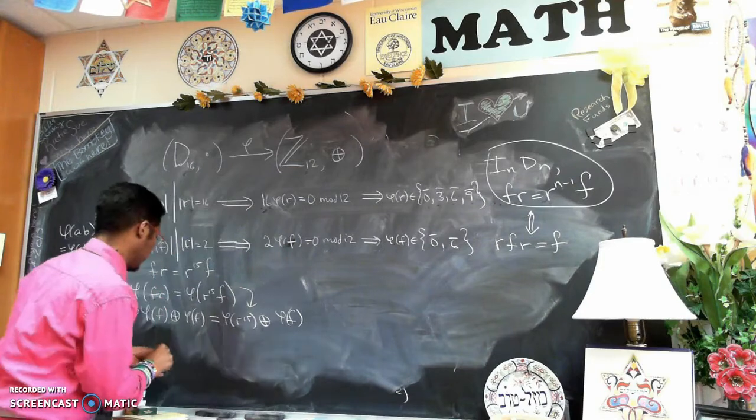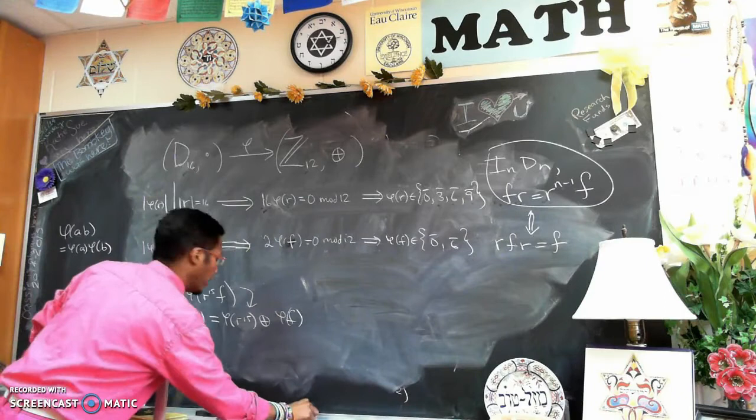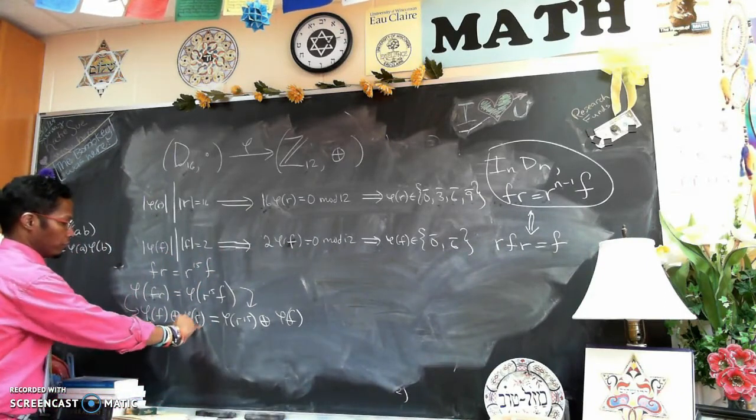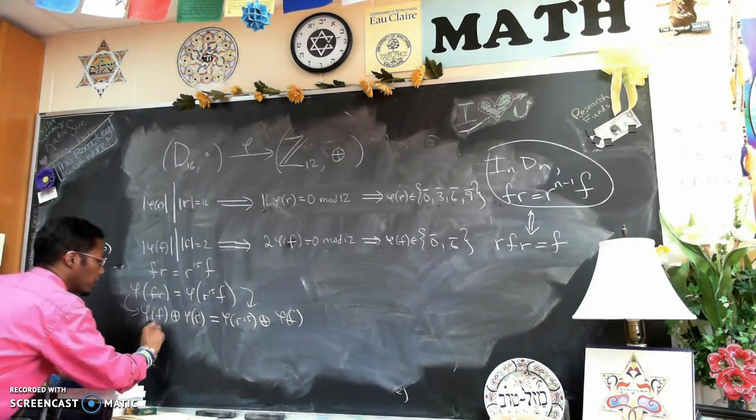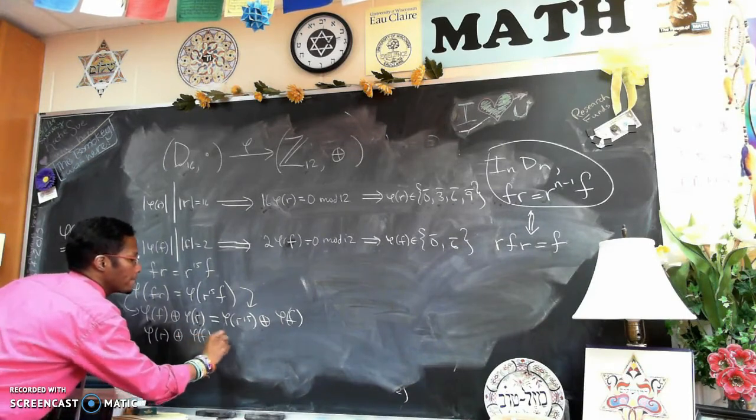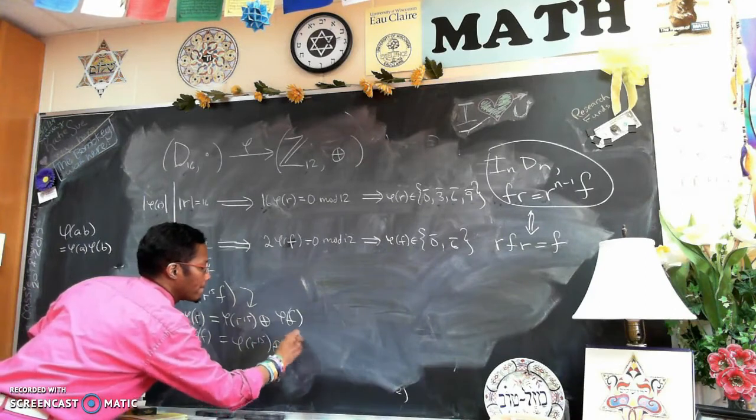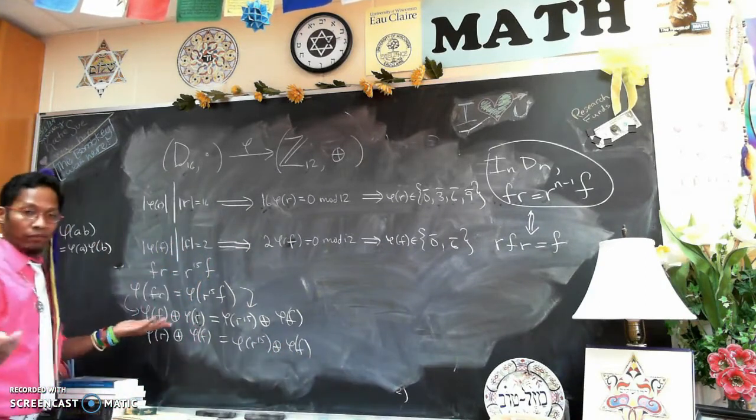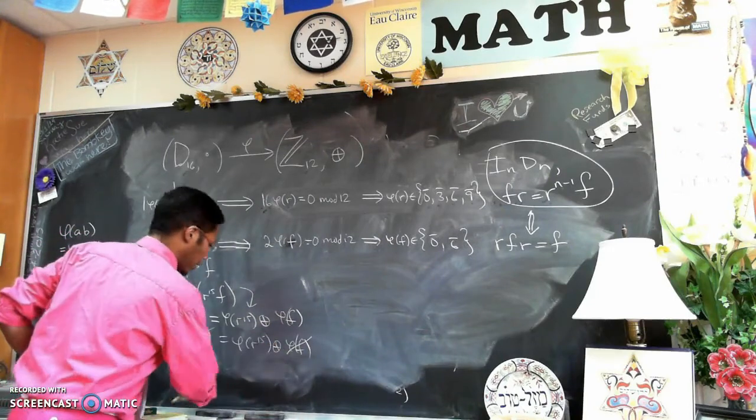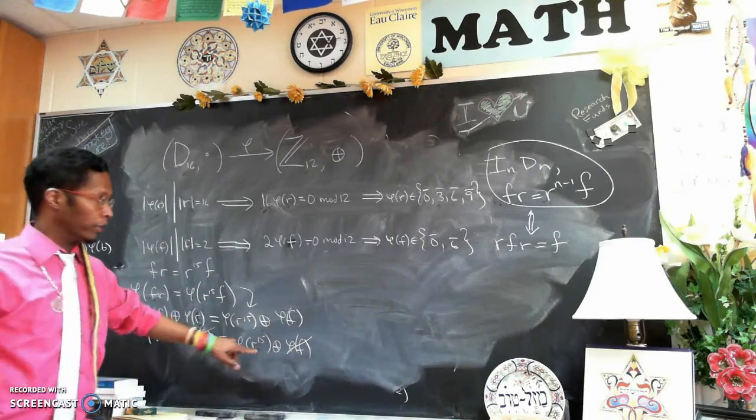We can move the φ(F). Oh, this should be a φ(R). We can change these locations. So this becomes φ(R) plus φ(F) equals φ(R to the 15th) plus φ(F). And now, we have legal cancellation since we're in the group Z12. We can cancel there, and then we're just left with φ(R) equals φ(R to the 15th).